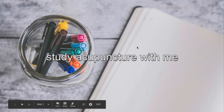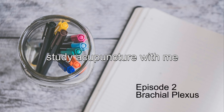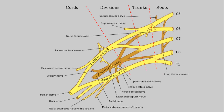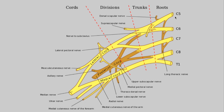Welcome back to another episode of Study Acupuncture with Me. This is episode number two. Today we're going to be going over the brachial plexus as it relates to the NCCAOM. The brachial plexus is something that everyone hates to study. One of the mnemonics that we all learn is 'Real Therapists Drink Cold Beer,' where the branches are Beer. The brachial plexus has roots that come off the spinal cord: C5, C6, C7, C8, T1.